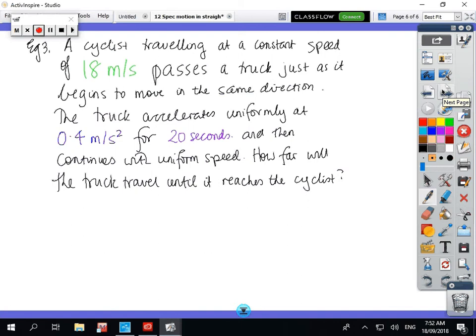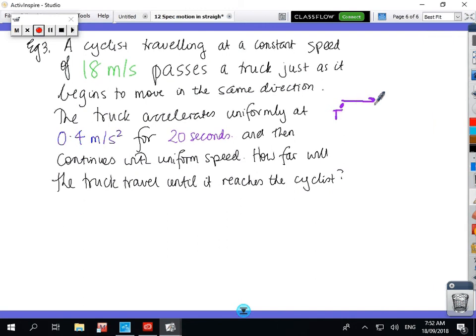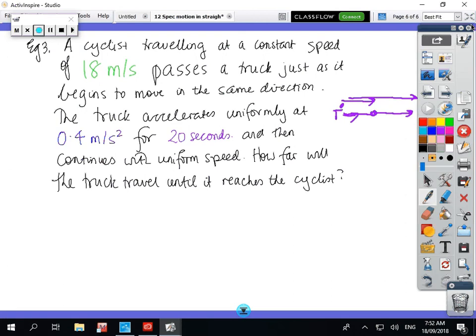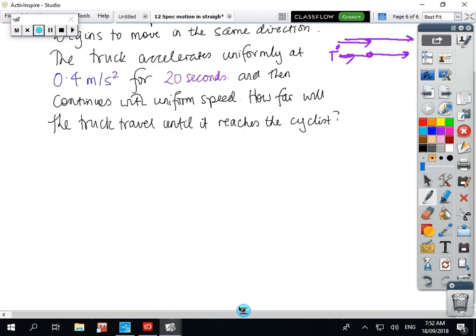Okay, cyclist travelling at a constant speed of 18 metres per second past the truck. Okay, so we've got this truck there, and the cyclist goes past it, and then the truck starts chasing it, accelerate uniformly at 0.4 metres per second for 20 seconds, and then it goes at constant speed. How far will the truck travel until it reaches the cyclist? So the cyclist is going on, and then the truck's accelerating, and then goes at constant speed, and then catches it up. Okay, so let's have a look at what we're going to do.